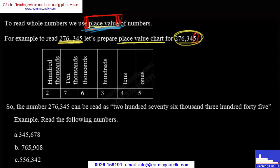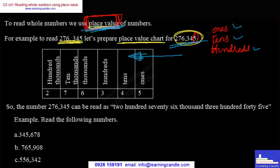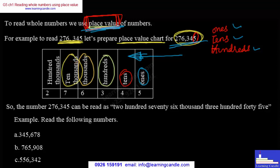On the place value chart, reading from right to left: first comes ones, then tens, then hundreds. Then we continue with hundreds and thousands.